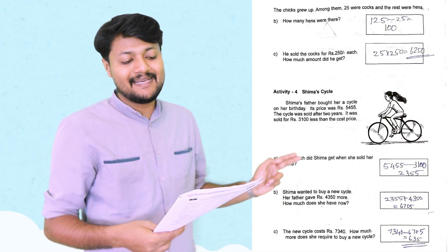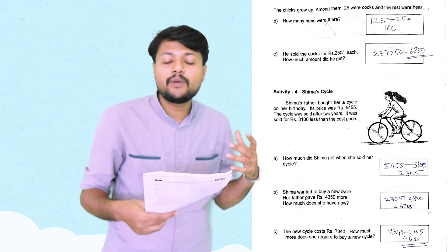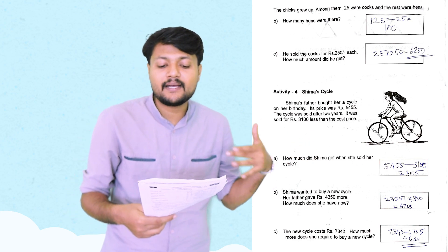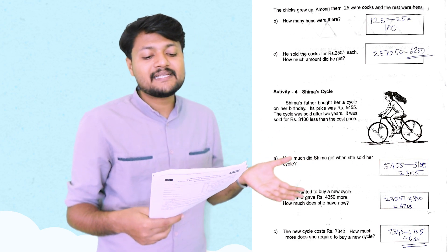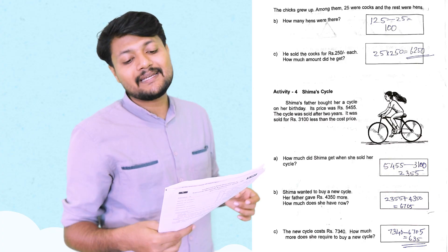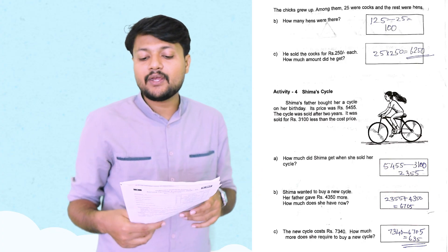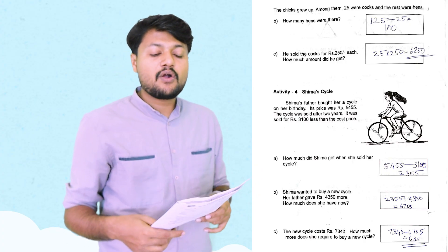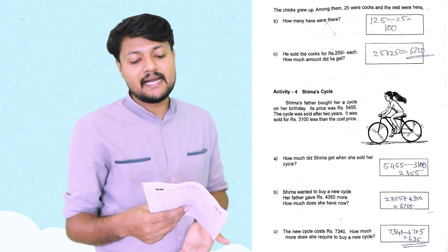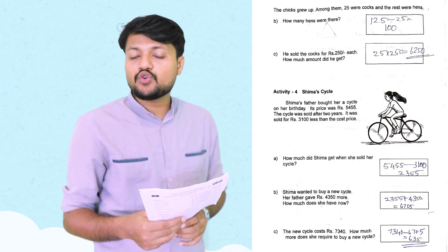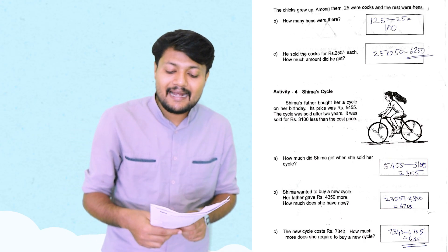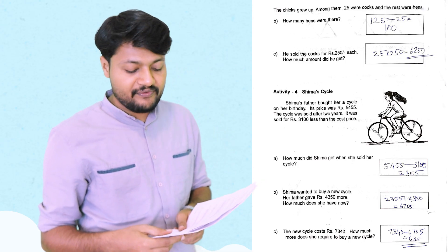He sold the cocks for Rs. 250 each. How much amount did he get? Then we call it the cocks for Rs. 250. 25 into Rs. 250. That is equal to Rs. 6,250. Okay.